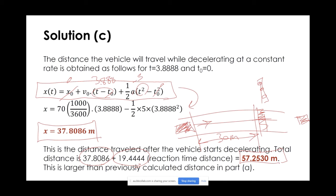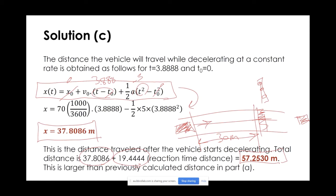Hopefully this example gives you a nice overview of how these motion equations can be used in practice to calculate or predict the location of a vehicle at different times and in different situations — whether we have constant speed, constant acceleration, or a varying acceleration function.